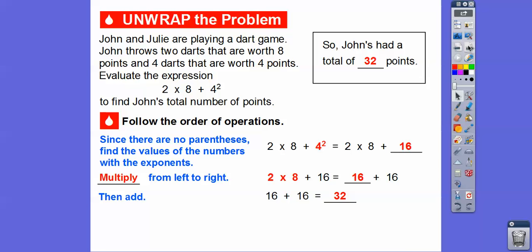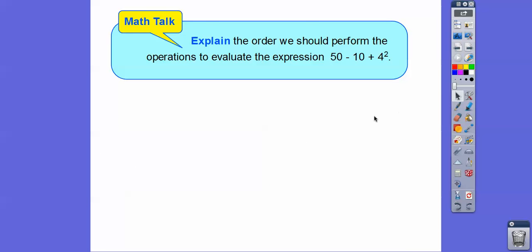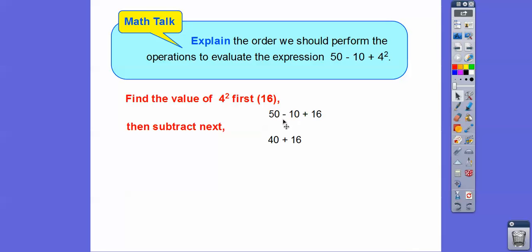It seems easy, but kids get tripped up a lot — you just have to follow the order of operations. Let's explain the order to evaluate this next expression. Since there's no parentheses, go right to the exponent: find the value of 4² first, which is 16. Then we subtract because that comes first — there's no multiplying or division, so we go to addition and subtraction. We subtract first: 50 minus 10 is 40. Then we add: 40 + 16 = 56.